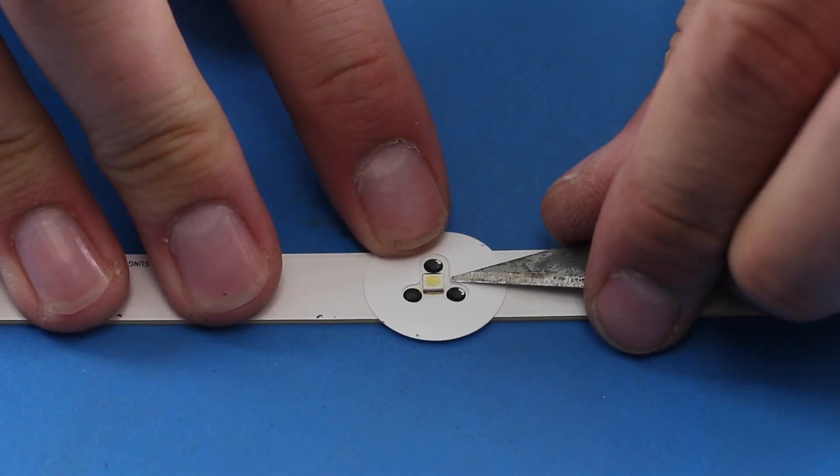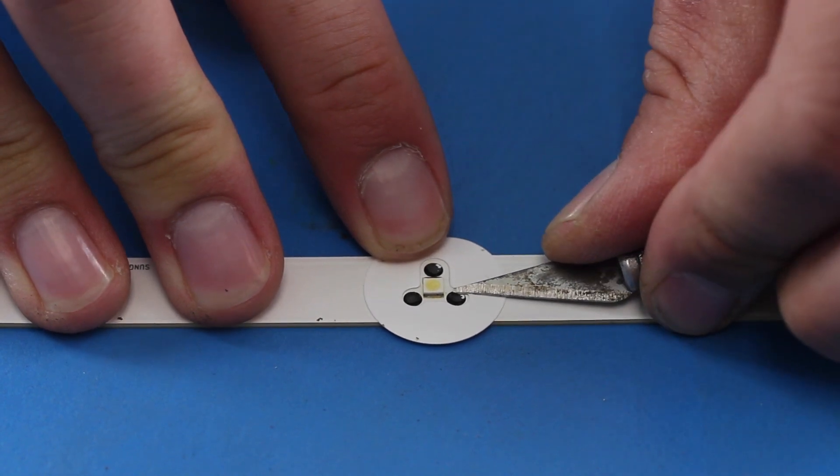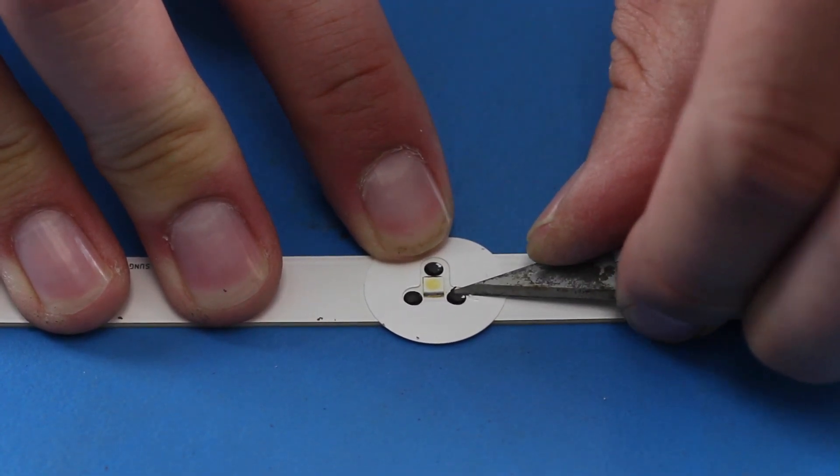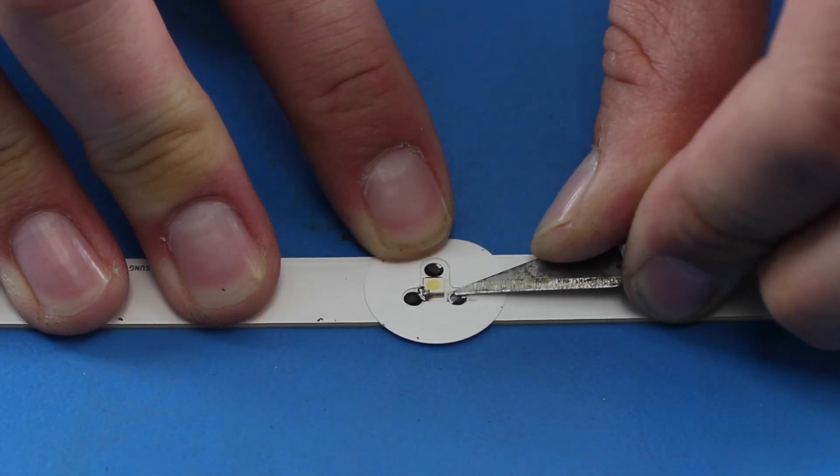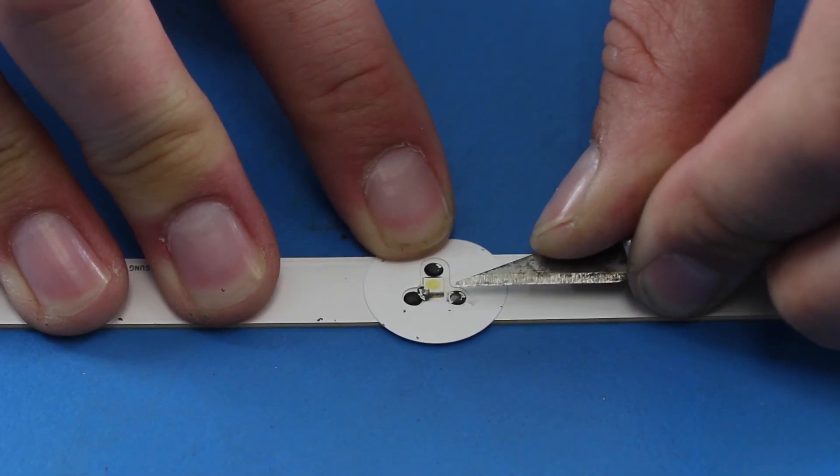I will use my tweezers to remove the plastic glue around the LED. Removing this glue ensures that the replacement lens will rest at the proper height after replacing the LED.